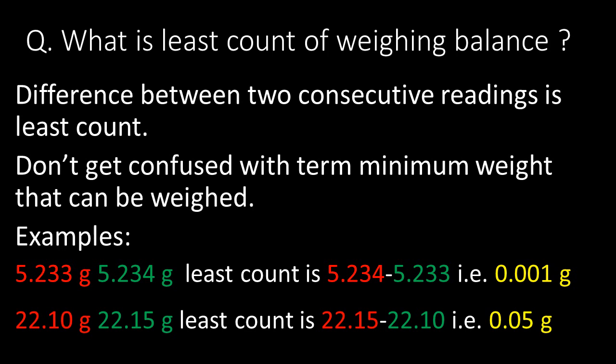Please don't get confused with the term 'minimum weight that can be weighed.' For better clarity, two examples are given. If a weighing balance shows a reading of 5.233 grams and after addition of weight the immediate next reading is 5.234 grams, we calculate the difference between these two consecutive readings: 5.234 minus 5.233 equals 0.001 gram. Here we get the least count of the weighing balance as 0.001 gram.